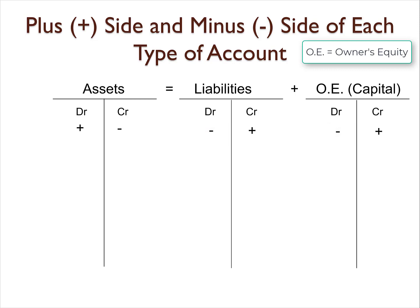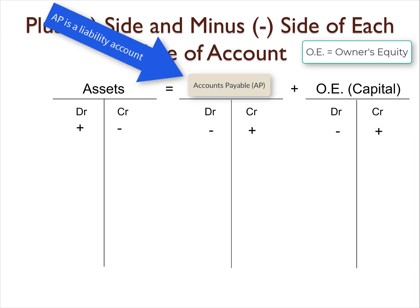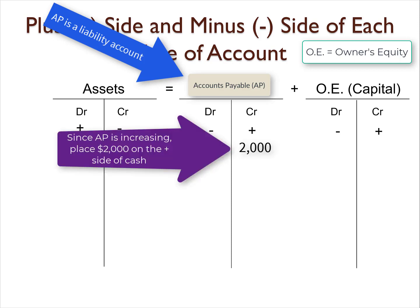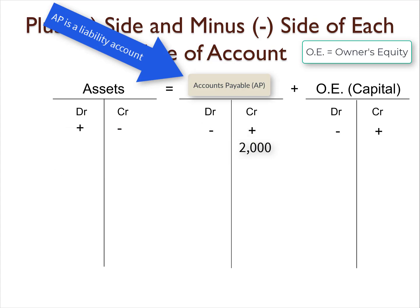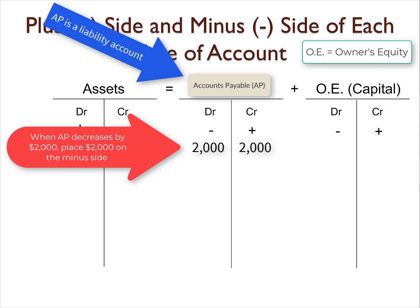So let's say accounts payable, also called AP, increased by $2,000 because the company bought something and promised to pay later. We need to know which type of account AP is — AP is a liability. And since AP increased by $2,000, we would need to put $2,000 on the plus side, which is the right side for all liability accounts. If later accounts payable decreased by $2,000, we would need to place $2,000 on the left side because the left side is the decreased side for liabilities.